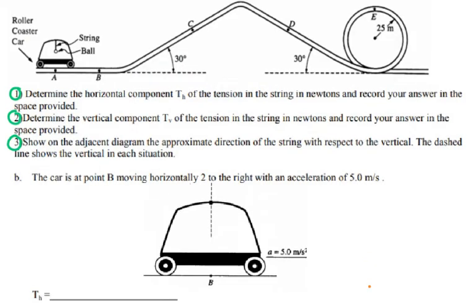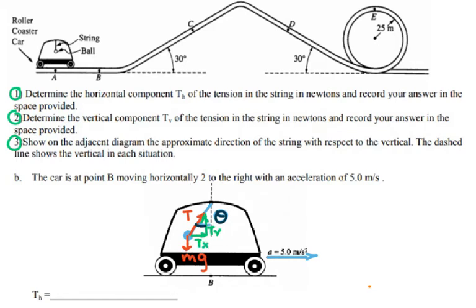For the first case, the acceleration of the car is 5 meters per second squared horizontally. When the car is accelerating, the ball hanging on the string is deflected by some angle theta. The forces acting on the ball are the tension force and the force of gravity mg. The tension force has vertical and horizontal components: the horizontal component is tx and the vertical component is ty.